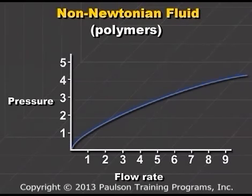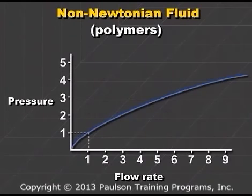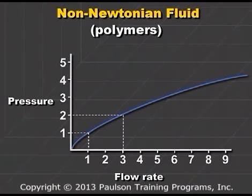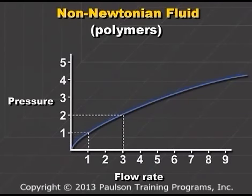The line is not straight. You can see that the pressure and the flow rate are not directly proportional. In this example, when the pressure is 1, the flow rate is 1. When the pressure is doubled to 2, the flow rate goes up to 3. Doubling the pressure causes the flow rate to go up by 3 times.